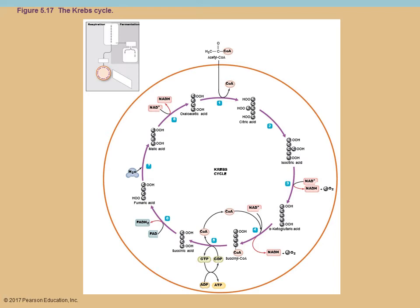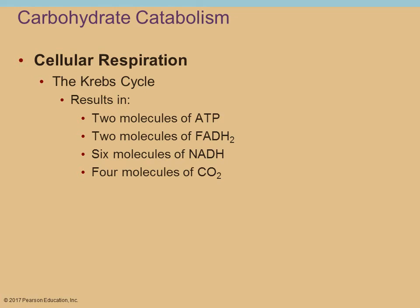In step five, coenzyme A is removed and recycled. GDP comes in taking a phosphate, transferring it to ADP to generate an ATP molecule, leaving succinic acid — still four carbons. Then FAD removes a pair of electrons, leaving as FADH2, giving fumaric acid. Water is added forming malic acid, then NAD removes a pair of electrons leaving as NADH, and you're back to oxaloacetic acid, allowing the cycle to continue. Per turn of the cycle you have three NADH, one FADH2, and one ATP. Since you had two acetyl-CoA, the cycle turns twice — giving six NADHs, two FADH2, two ATPs, and four CO2.